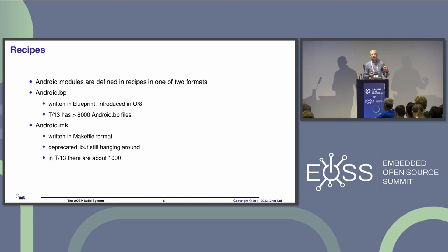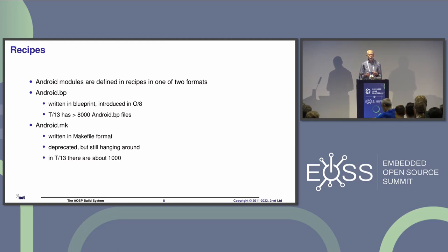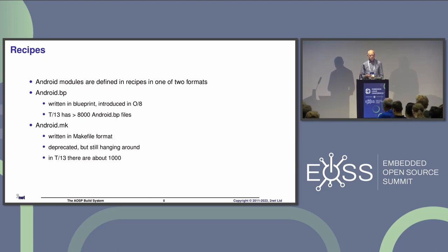Android modules are currently defined in two different ways. You can define them in `Android.bp` files — bp stands for Blueprint, which is a language specific to AOSP for defining a module, similar to a `.bb` file in Yocto terms. In Android 13 we have in excess of 8,000 Android.bp files. There is also a legacy format, `Android.mk`, which has been deprecated for quite some time, but there are still just under a thousand of them in AOSP. The build iterates through all bp and mk files and builds whatever is specified in your product packages.